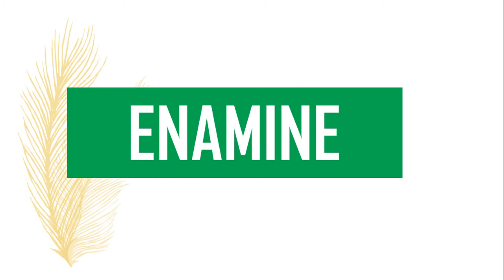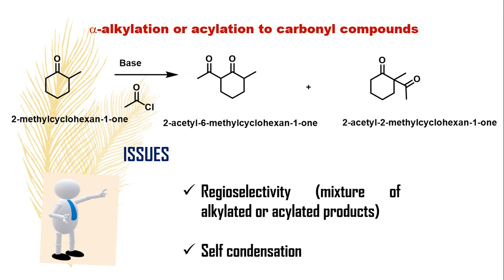Enamines are very important synthetic intermediates which are very useful for the formation of C-C bonds in organic synthesis. Before going to discuss about these enamines, let us discuss about alpha-alkylation or acylation of carbonyl compounds.